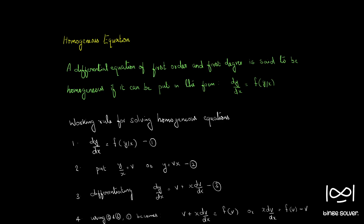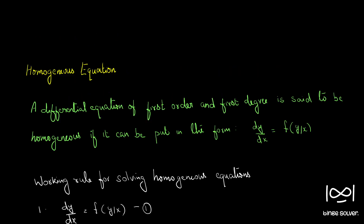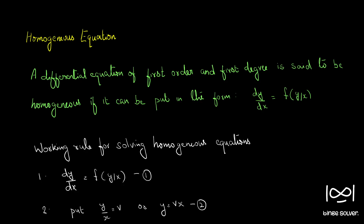Homogeneous equations definition: a differential equation of first order and first degree is said to be homogeneous if it can be put in the form dy/dx = f(y/x). So if we can rearrange the terms such that every occurrence of y and x is in the form y/x or its powers, we can say that it's homogeneous.